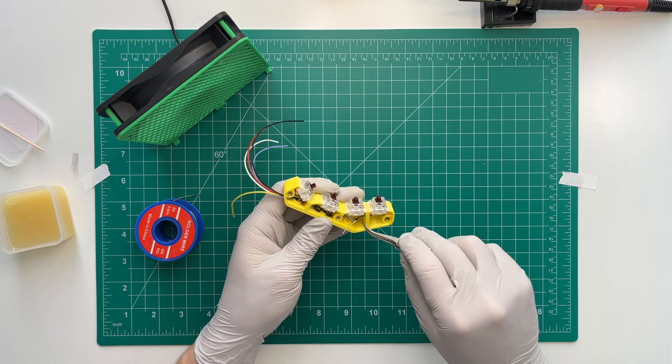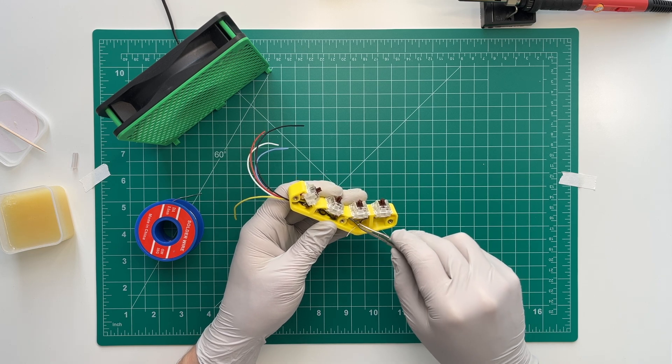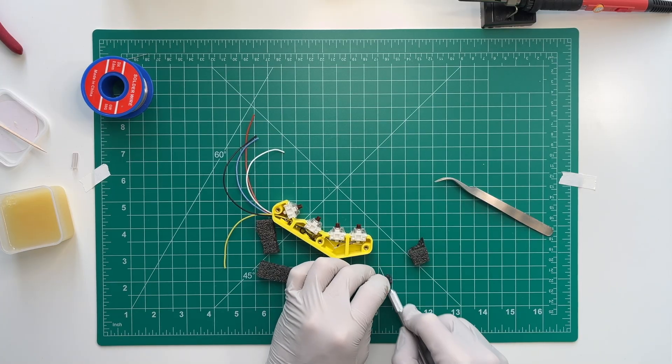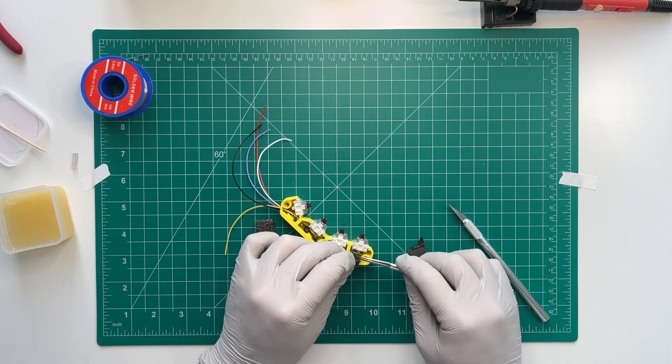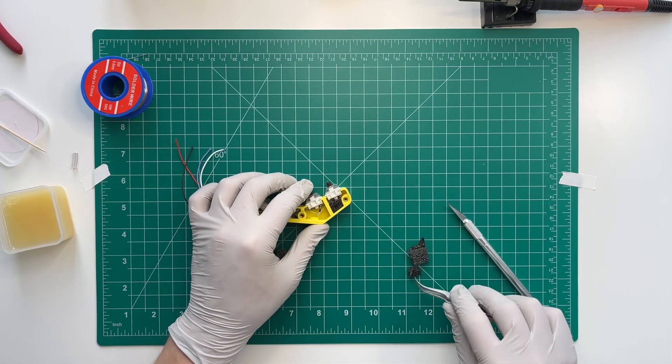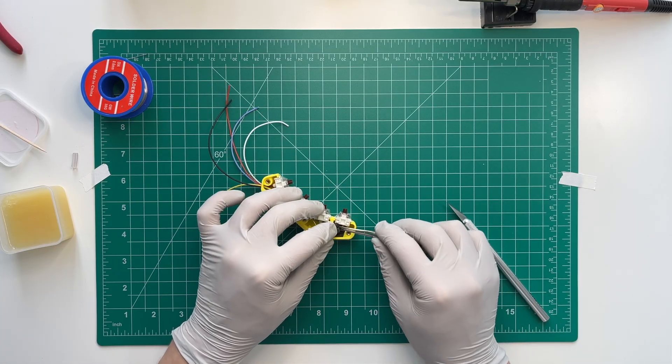I'm giving every diode a nice tug to make sure they're all soldered correctly, and with that we are ready to move on to another sound-improving technique that eliminates the hollow sound coming from the plastic case. It's fairly easy to do and makes a huge difference in how the keys sound.